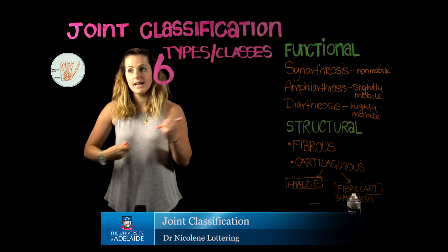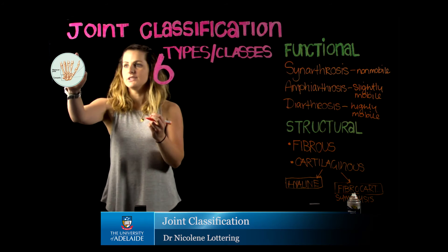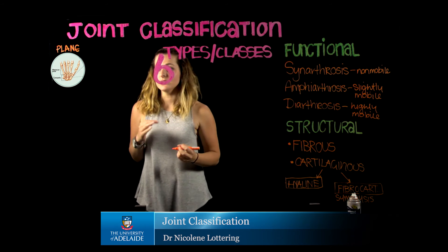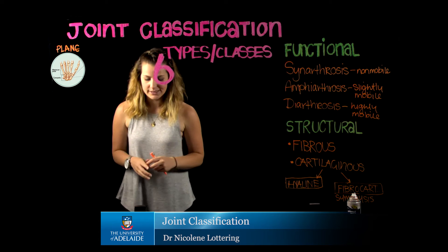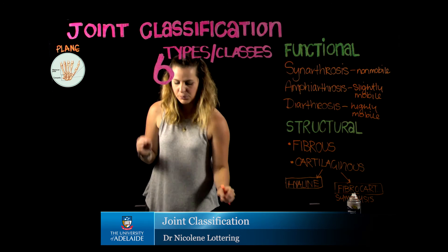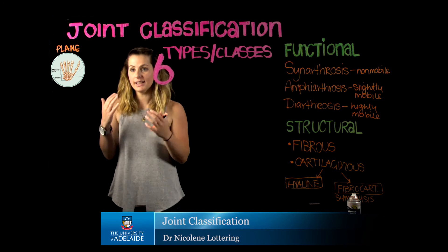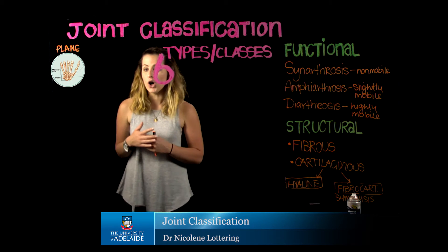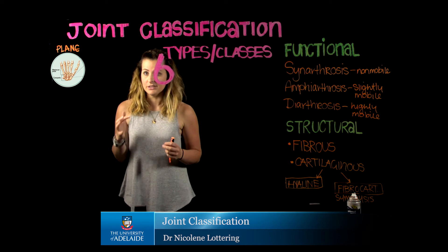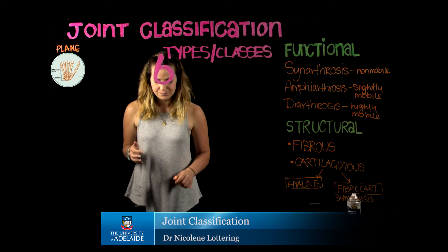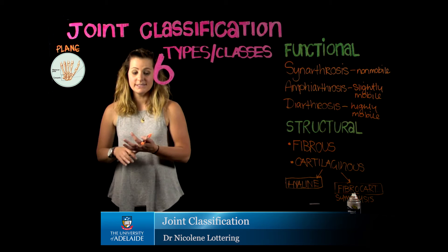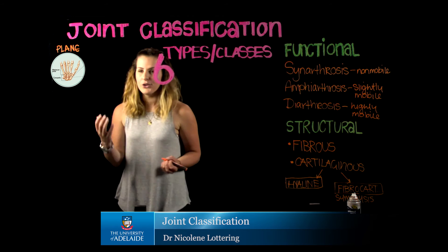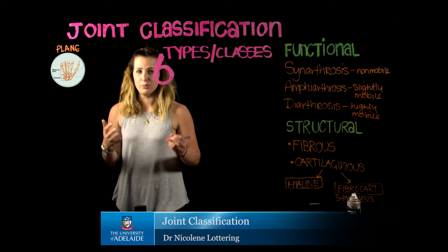The first type of synovial joint is going to be our plane joint, also known as a gliding joint. What is important to remember when classifying these specific classes is that they are usually based on the range of movement associated with each of them. When talking about the range or axes of movement, I use the acronym NUM to help remember.